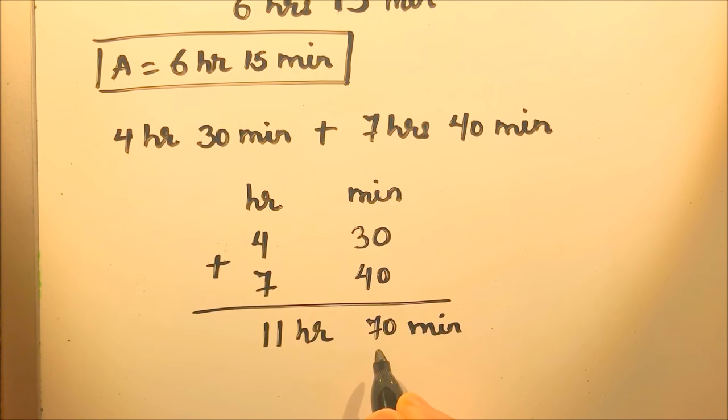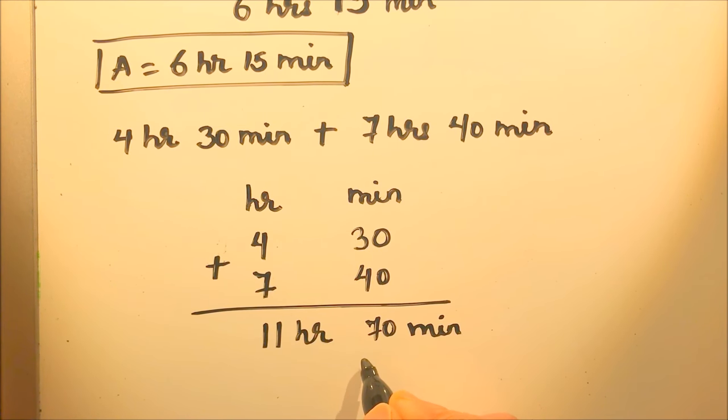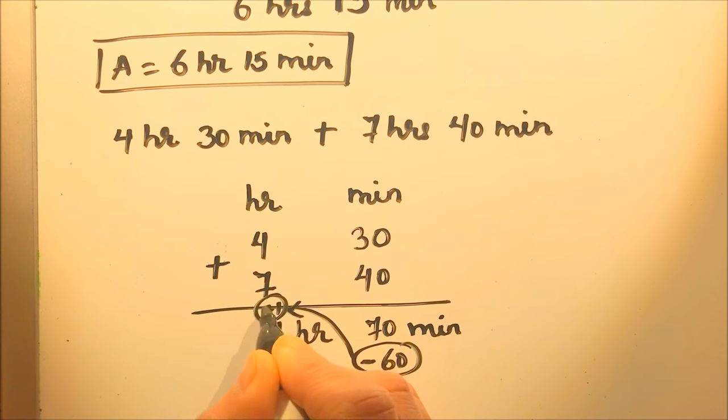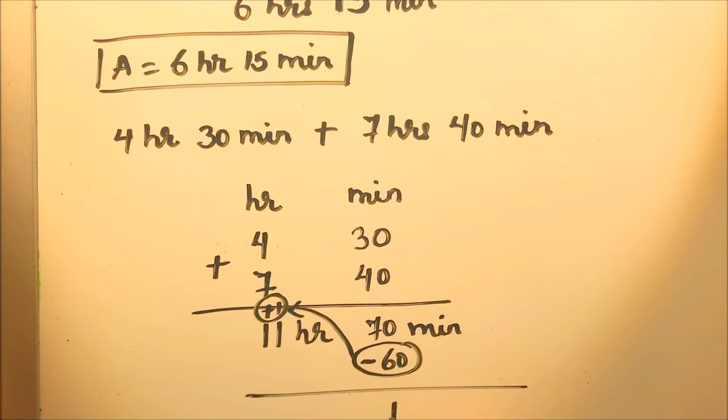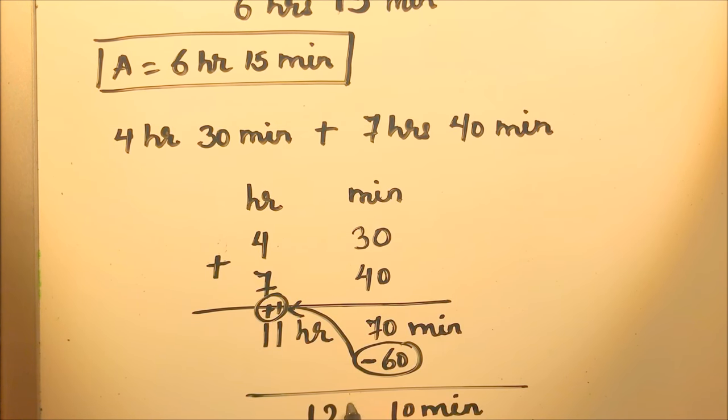So this 70 is more than 60, so we will subtract 60 from here and this 60 will get added to 11 hour. So our answer will be 70 minus 60 is 10 minute and 11 plus 1 is 12 hour.